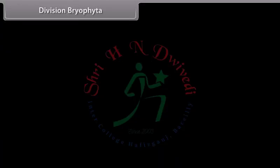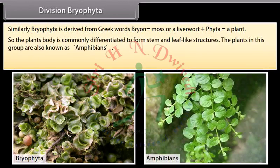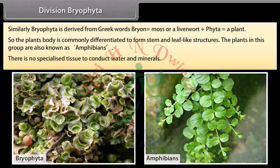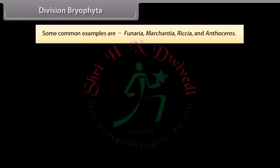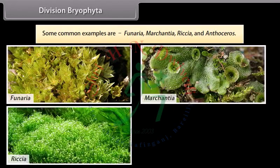Bryophyta is derived from Greek words 'Bryon' meaning moss or liverwort, plus 'phyta' meaning a plant. The plants' bodies are commonly differentiated to form stem- and leaf-like structures. The plants in this group are also known as amphibians of the plant kingdom. There are no specialized tissues to conduct water and minerals. Some common examples are Funaria, Marchantia, Riccia, and Anthoceros.